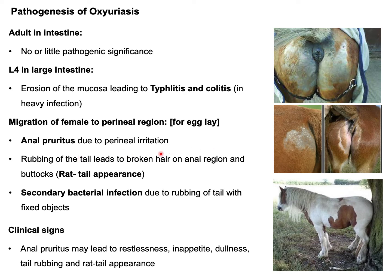Anal pruritis can be found due to perianal irritation by the female parasite while laying eggs. Due to this irritation, there will be rubbing of the perineal region or tail head, leading to broken hair or alopecia on the perineal region — this will look like a rat tail appearance. Due to intense irritation, the animal will try to rub its buttocks on fixed objects, which can also lead to secondary bacterial infection. Clinical signs include anal pruritis, restlessness, loss of appetite, dullness, and alopecia.